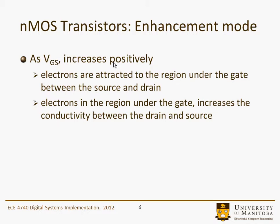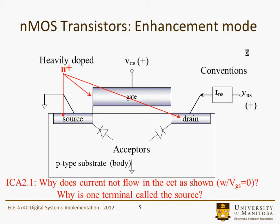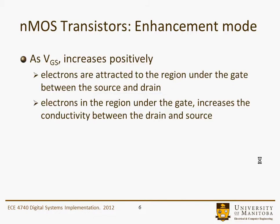As VGS increases positively — this is more or less correct, not 100% accurate — electrons are attracted into the region under the gate between the source and the drain. The electrons in the region under the gate increase the conductivity between drain and source; that part is actually true physically. Here we applied a slight gate voltage and started to attract electrons into the channel area.